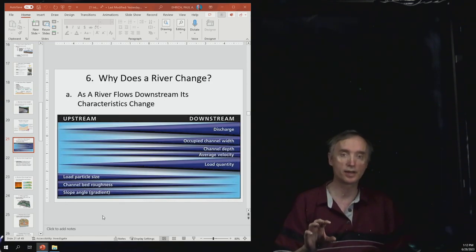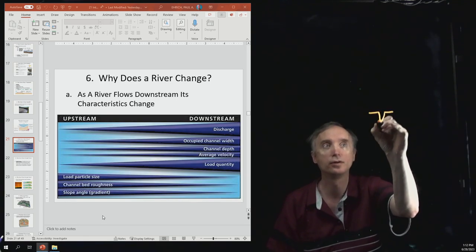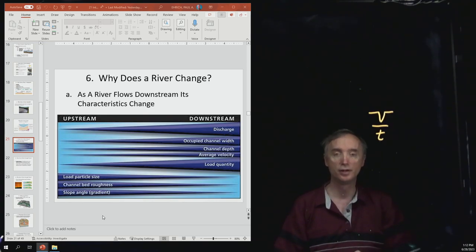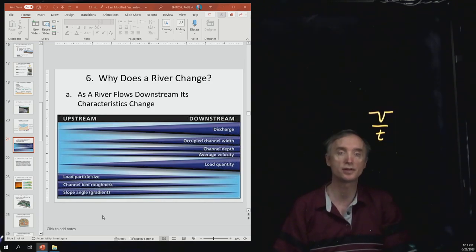This chart shows that, for example, the discharge is going to increase. The discharge was the volume per second, volume per unit time, and that's just because there's going to be more tributaries emptying into the river and each of those tributaries is going to be carrying more and more water. So the amount of water per second is going to increase as you go downstream.